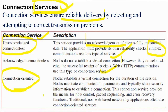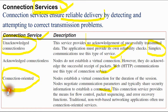The third is connection-oriented service. Here, nodes establish one virtual connection and one session, and then nodes negotiate communication parameters and typically share security information to establish the connection. This connection service provides flow control, packet sequencing, and error recovery functions. Traditional non-web-based networking applications often use connection-oriented services, making it a very important service in networking.